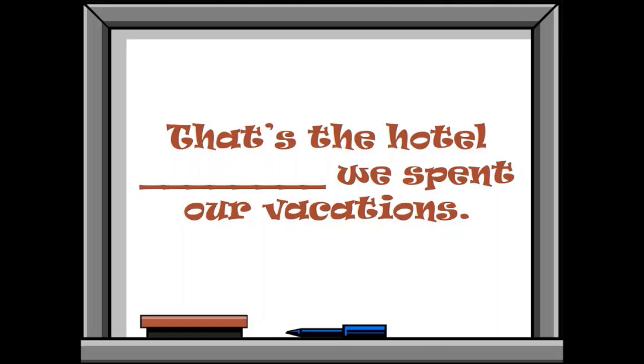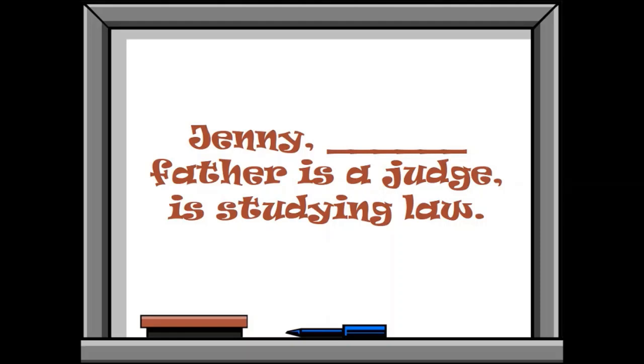That's the hotel dash we spent our vacations. What will come here? Here, we are talking about place. For place, we use good: where. Jenny dash father is a judge, which is study law. Here we are talking about the possession. What will come here? Whose. Good.